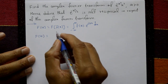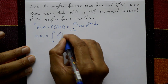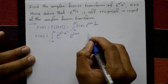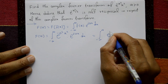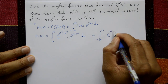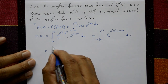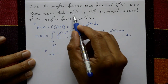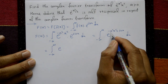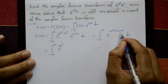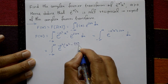So F(u) = integral from minus infinity to plus infinity of e^(-a²x²)·e^(iux) dx, which equals the integral of e^(-a²x² + iux) dx. Take minus a² outside: inside becomes x² - iux/a². Now rearrange the degree: x² minus 2x·(iu/2a²) plus (iu)²/(4a⁴) minus i²u²/(4a⁴), completing the square.